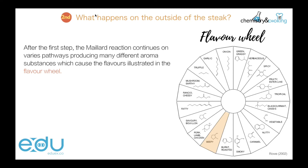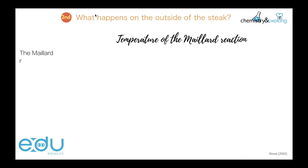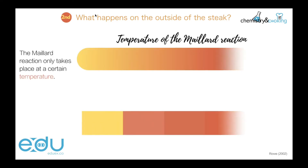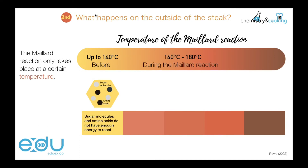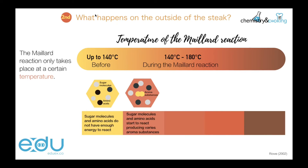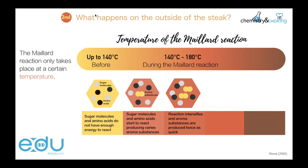Temperature is really important for the Maillard reaction — it takes place within a certain window. Up to 140 degrees Celsius, the sugar molecules and amino acids don't yet have enough energy to react. From 140 to 150 degrees Celsius, aroma substances begin to be produced as the sugar molecules and amino acids now have enough energy for successful collisions. Heating further from 150 to 160 degrees, the reaction intensifies and we have double the amount of aroma substances being produced.